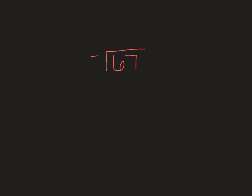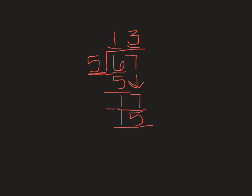Let's do 67 divided by five. Divide: six divided by five is one. Multiply: five times one is five. Subtract: six minus five is one. Bring it on down and bring it on back. Divide: seventeen divided by five is three. Multiply: five times three is fifteen. Subtract: seventeen minus fifteen is two. I have nothing else to bring down, so my remainder is two. My quotient is thirteen and my remainder is two.